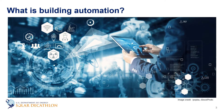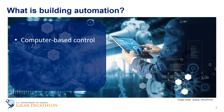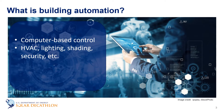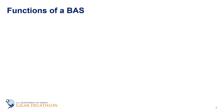So what is building automation? It is the computer-based control of a building's heating, ventilation, and air conditioning, lighting, shading, security, and other systems. Together, they are commonly referred to as Building Automation Systems, or BAS. They are alternatively called Building Management Systems (BMS), Building Control Systems, or Building Energy Management Systems. A BAS has many functions.